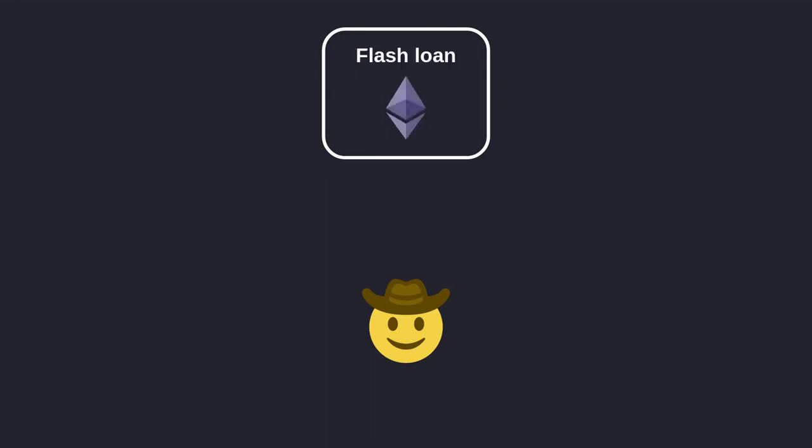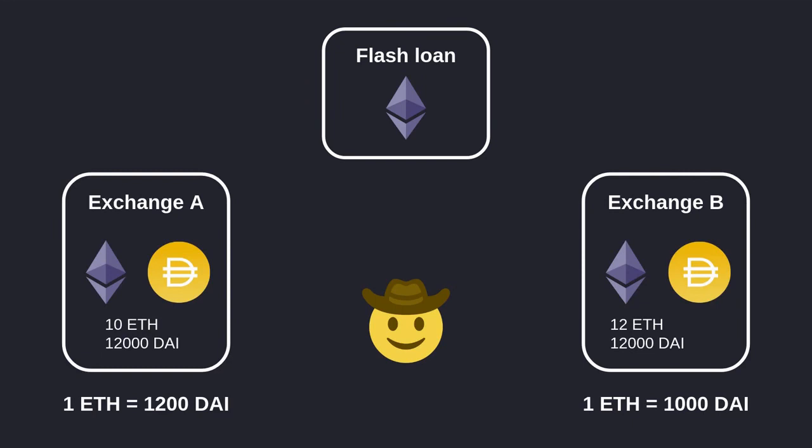Let's now take a look at how flash mint can be used. I'll show you how to do an arbitrage using a flash loan, and then using flash mint. Let's say on exchange A one ETH is trading for 1200 DAI, and on exchange B one ETH is trading for 1000 DAI. To make profit I want to buy cheap and sell high. DAI is cheaper on exchange A compared to exchange B — for the same amount of ETH I get more DAI on exchange A. So the strategy is to buy DAI from exchange A and sell it on exchange B for profit.